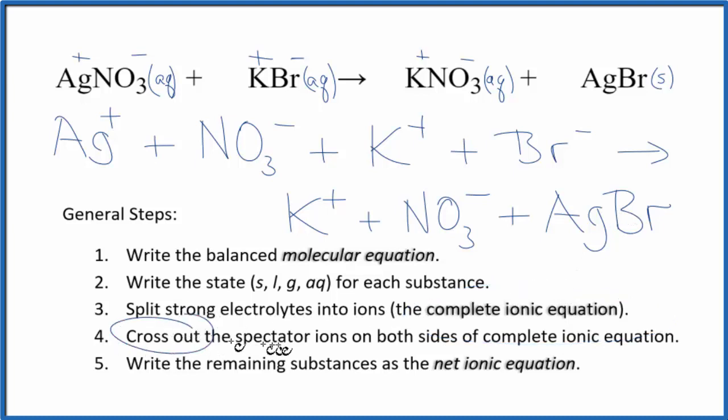At this point, we cross out the spectator ions. They're on both sides of the complete ionic equation and haven't changed, so we're not interested in those. In the reactants, I see a nitrate ion. In the products, I see a nitrate ion. Let's get rid of that. Potassium ion—cross it out.